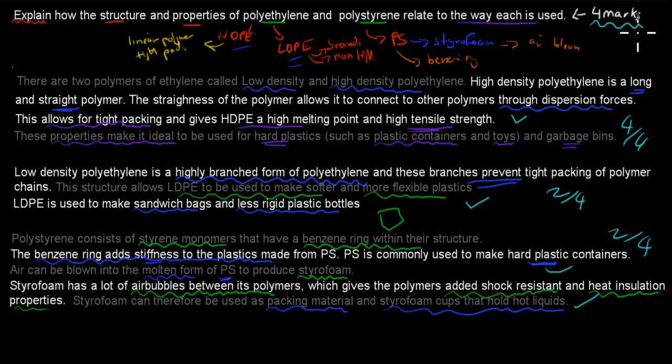Overall, for a four-mark question, you have about seven minutes to answer. So for this kind of question, you should definitely get four out of four. But if you write a bit less, you should still be okay. Just make sure you cover the basics: name them - high-density, low-density polyethylene. Name what that structure does to their properties, and name what those properties do to the way they're used as well.